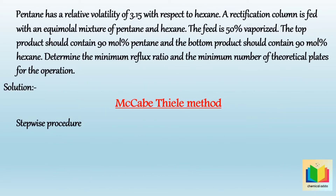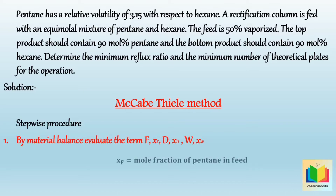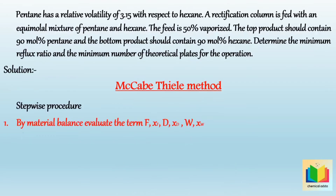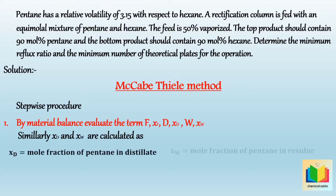Now let's solve the problem. The first step is to evaluate F, XF, D, XD, W, and XW by material balance. XF equals the mole percent of pentane in the feed divided by 100. Since the feed is an equimolal mixture, XF equals 50 divided by 100, which gives XF equals 0.5. Similarly, XD is the mole fraction of pentane in the distillate, and XW is the mole fraction of pentane in the residue. Since 90% pentane is present in the distillate and 10% in the residue, XD equals 0.9 and XW equals 0.1.